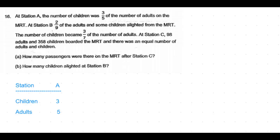Let's start with Station A. It says the number of children was three-fifths the number of adults, so children to adults are in the ratio 3:5. At Station B, two-ninths of the adults alighted, so the five portions must be divisible by nine. We find the common multiple of five and nine, which is 45. So we make the number of adults 45 units, and the number of children becomes 3 × 9 = 27 units.